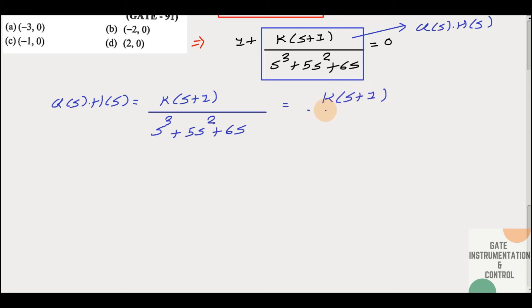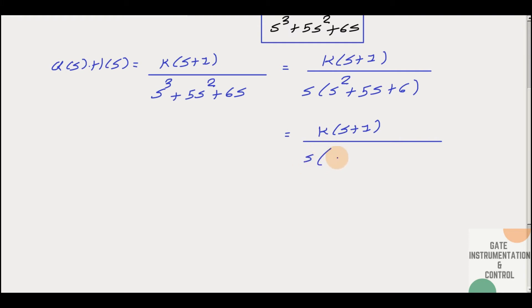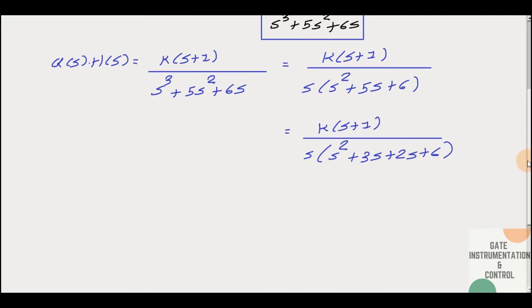Simplifying: k·(s + 1) divided by s·(s² + 5s + 6). Now we can factor the quadratic: s² + 5s + 6 = s² + 3s + 2s + 6.